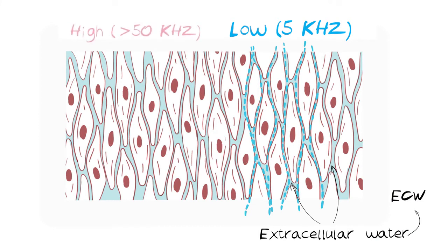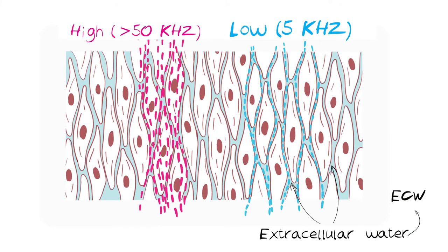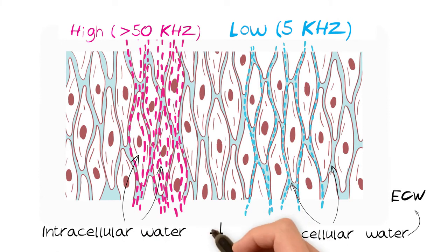Current with a frequency higher than 5 kHz is able to pass through cell membranes. This allows the measurement of impedance of substances inside the cells as well as outside the cells, therefore measuring total body water.